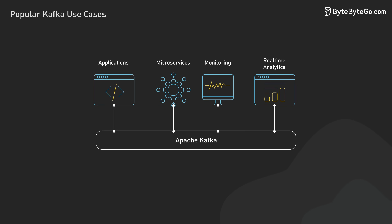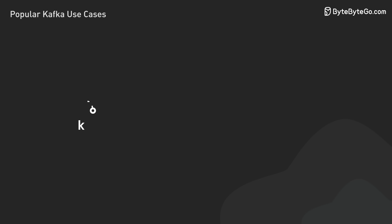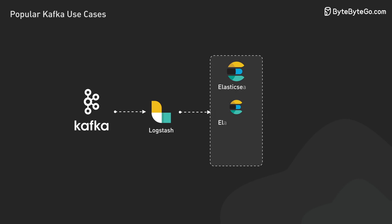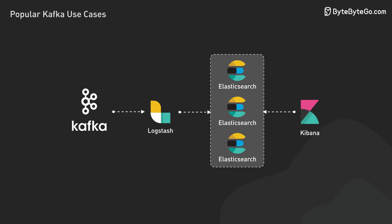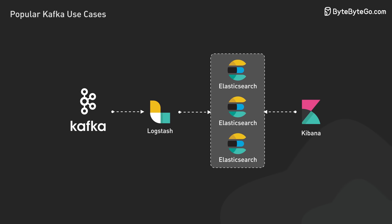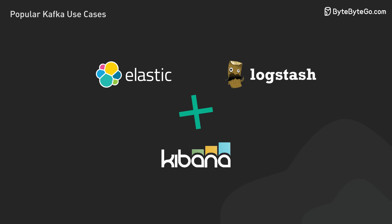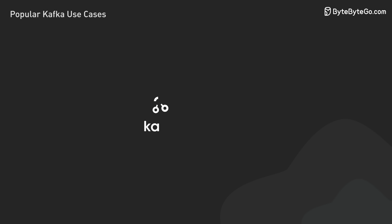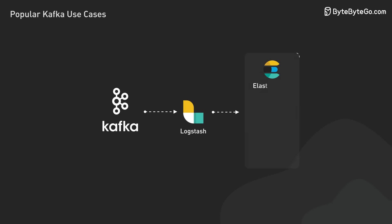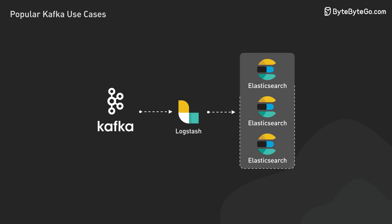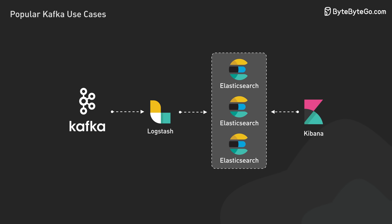It handles this high volume while keeping latency low. What makes modern log analysis powerful is Kafka's integration with tools like Elasticsearch, Logstash, and Kibana — known as the ELK stack. Logstash pulls logs from Kafka, processes them, and sends them to Elasticsearch. Kibana then lets engineers visualize and analyze these logs in real time.